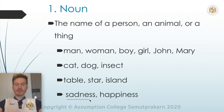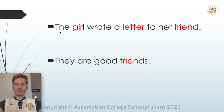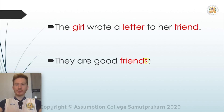We also have sadness and happiness — not 'sad' and 'happy', but sadness and happiness as nouns. These are abstract ideas or feelings. Let's read this sentence: 'The girl wrote a letter to her friend.' We have three nouns in this sentence: girl is a person, letter is a thing, and friend is a person. 'They are good friends' — here friends is in the plural form.